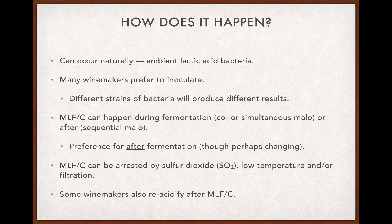How does malolactic conversion happen in the first place? Well, it can — and for most of wine history did — occur naturally, thanks to lactic acid bacteria being ambient where wines were made, and in fermentation and storage vessels like barrels and clay jars. These days, though, many winemakers prefer to inoculate their juice or wine with specific, often commercially prepared, strains of lactic acid bacteria, since different strains will produce different effects on the finished wine, and inoculating gives winemakers more control over those effects.